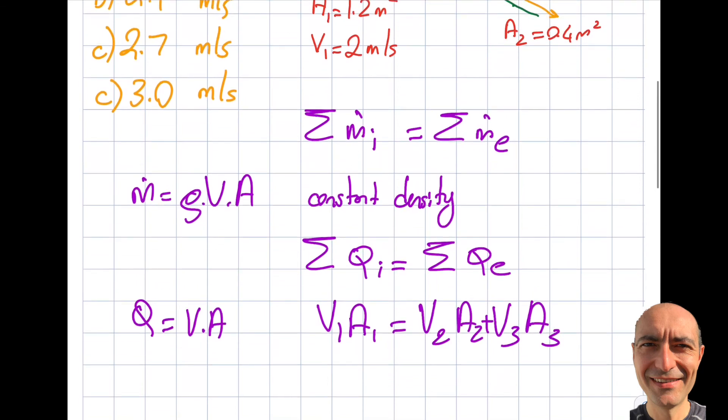Then I simply insert the numbers. This is 2 meters per second, V1 A1 is 1.2 meters squared. It will be equal to V2 A2 is what I'm being asked to find. A2 is 0.4 meters squared plus...